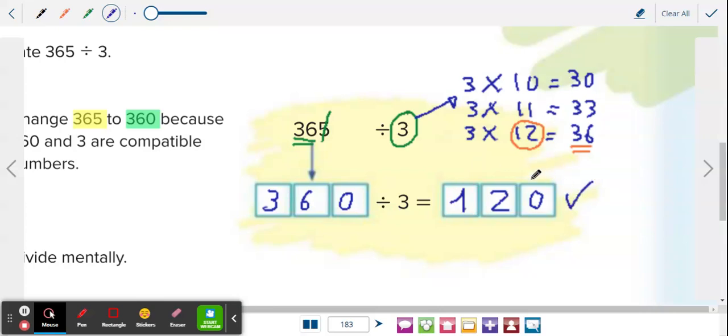This is the estimated quotient. The answer. So what are we saying here? That 365 divided by 3 is about 120. It's approximately 120.